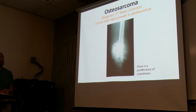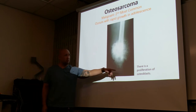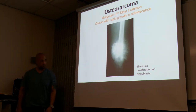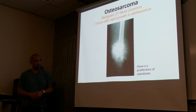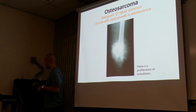Osteosarcoma is also malignant — the second most common type of bone cancer. It occurs with rapid growth in adolescence. With osteosarcoma, there is active proliferation of the osteoblasts — an overproduction of bone that they can't control.